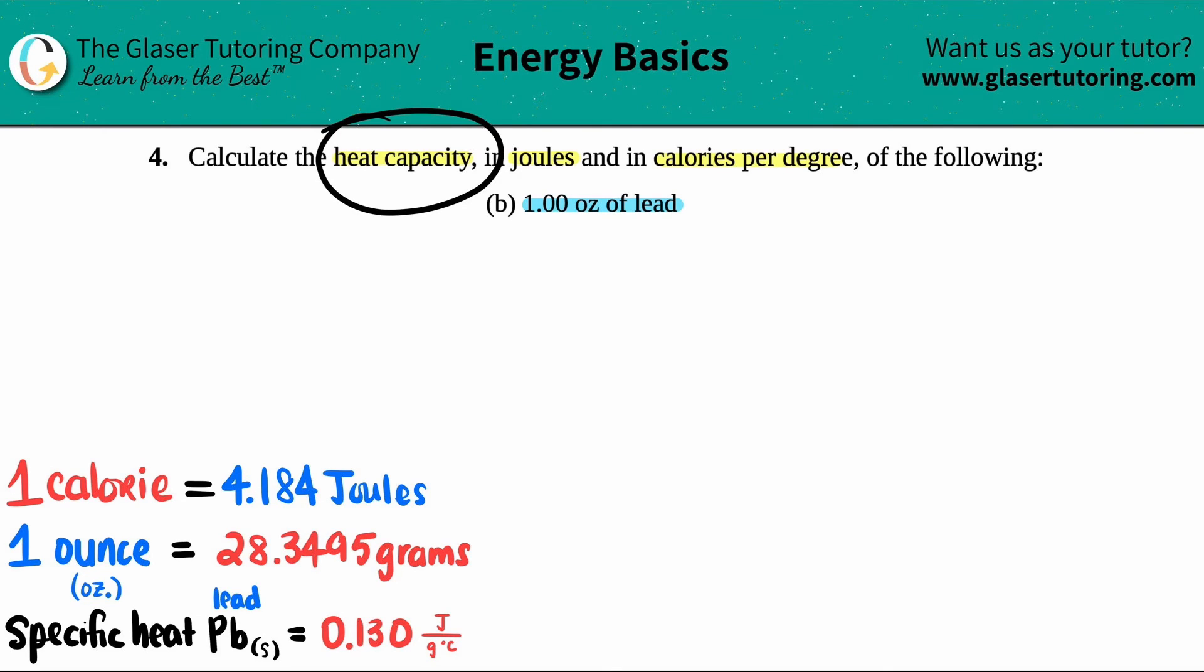There should be a formula. It's right here. It's just C = m × s. If we run through these, capital C is the heat capacity, and heat capacity is always in joules per degree Celsius, the standard unit in this formula.